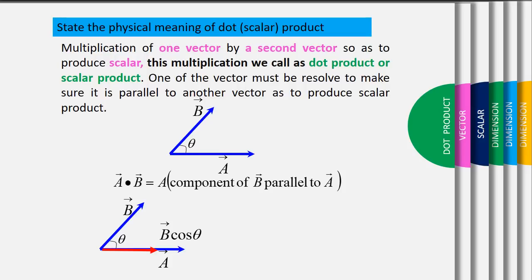The scalar product for these two vectors will be vector a dot vector b, equivalent to a multiplied with the component of b parallel to a. Its magnitude is given by vector a dot vector b equivalent to a b cos theta.